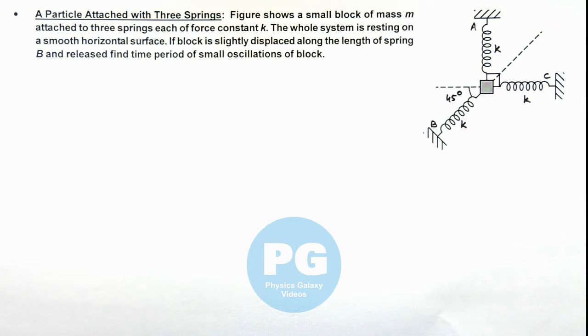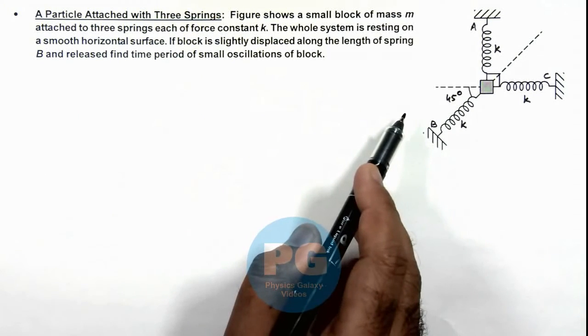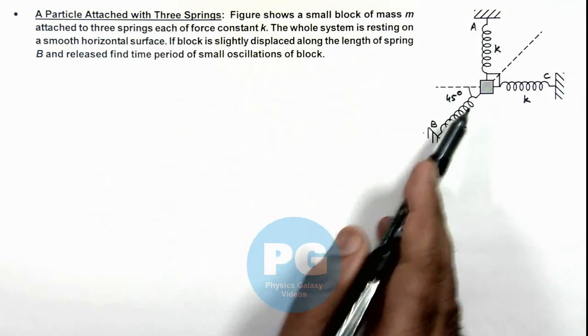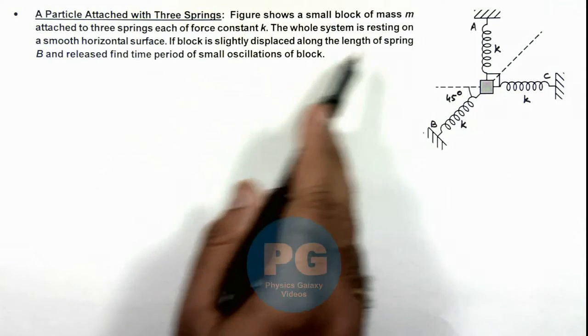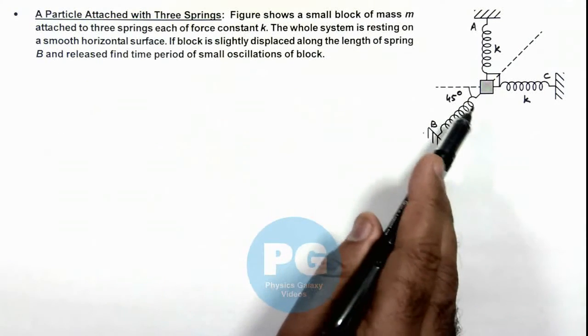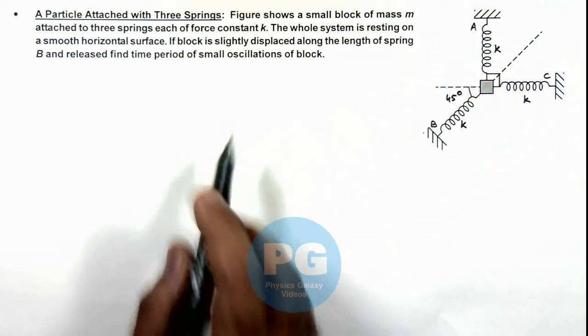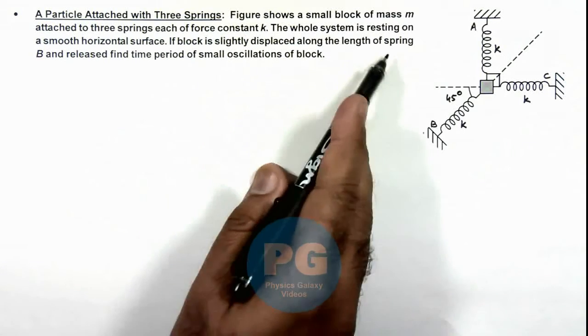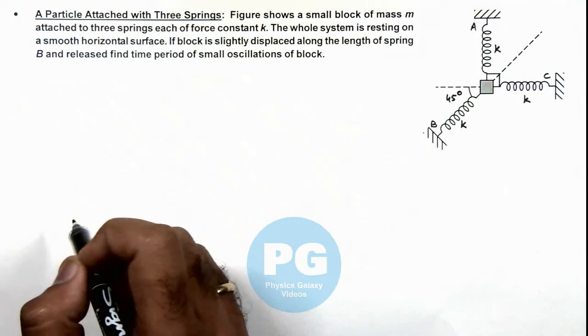In this illustration, we'll discuss a particle attached with three springs, as we can see in the figure, which shows a small block of mass m attached to three springs, each with force constant k. The whole system is resting on a smooth horizontal surface, meaning we are viewing it from the top. If the block is slightly displaced along the length of spring B and released, we are required to find the time period of oscillations.